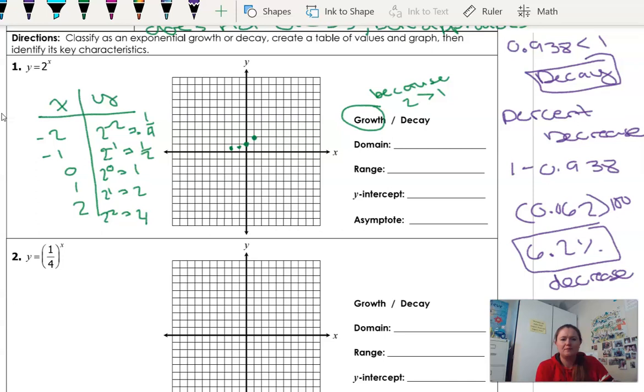Then we have 1, 2, over 1 up 2 if you remember your graphing. And then 2, 4, over 2 up 1, 2, 3, 4.